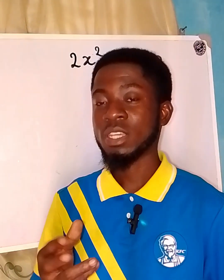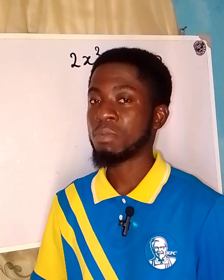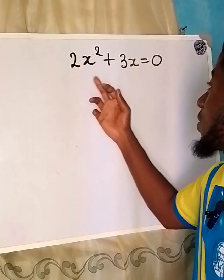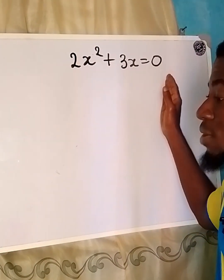Hello everyone, let's provide the solution to the problem on the board very quickly. We have 2x squared plus 3x equals 0.